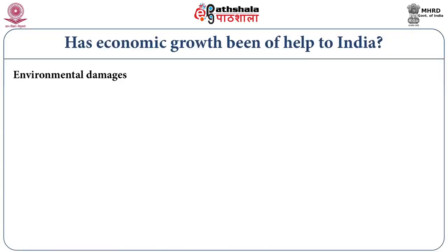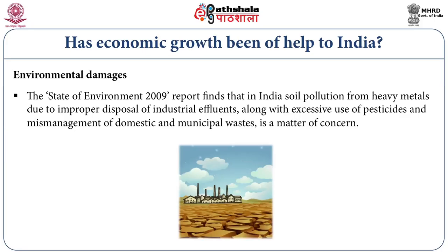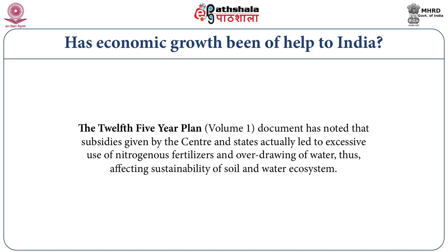The State of Environment 2009 report finds that in India, soil pollution from heavy metals due to improper disposal of industrial effluents, along with excessive use of pesticides and mismanagement of domestic and municipal waste, is a matter of concern. The 12th Five-Year Plan document has noted that subsidies given by the centre and states actually led to excessive use of nitrogenous fertilizers and overdrawing of water, thus affecting sustainability of soil and water ecosystems.